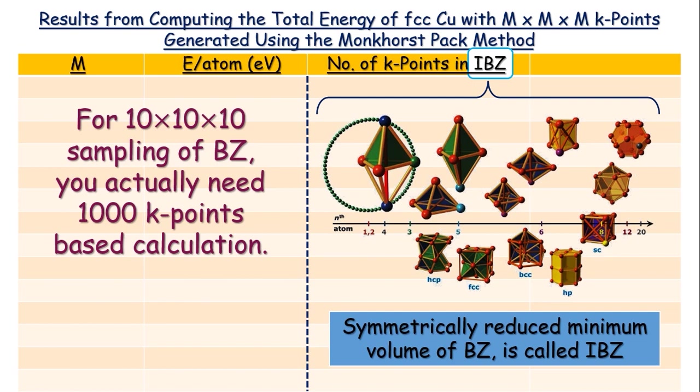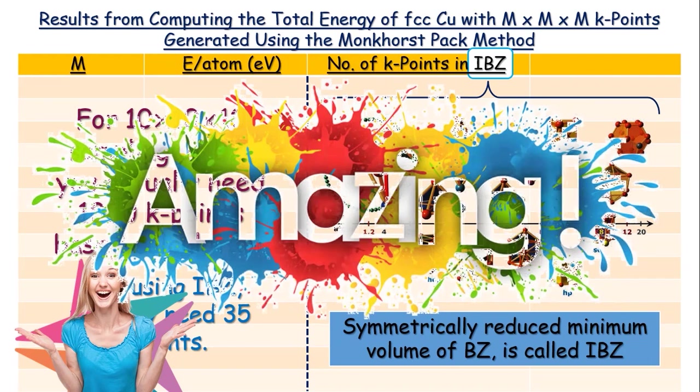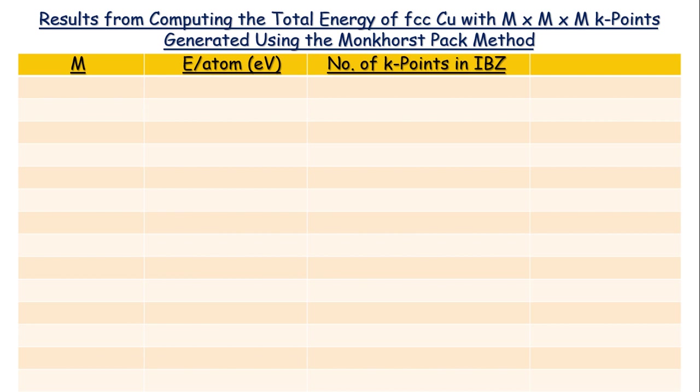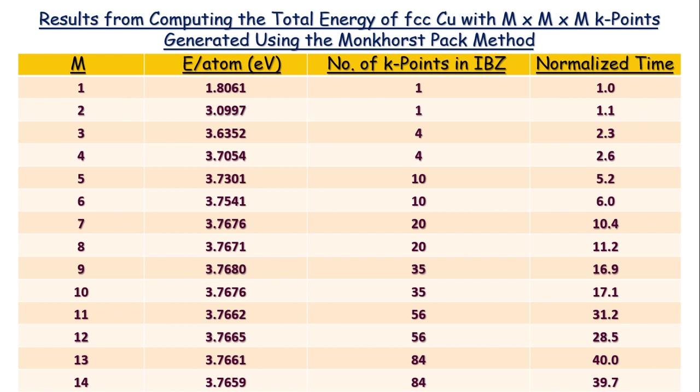Okay. Let's go back to our list. The next thing that is listed is normalized time. That is, time required for calculation with M cross M cross M K-points compared to the time required for 1 cross 1 cross 1 K-points. That is, the unit of time here is the time required for 1 cross 1 cross 1 K-points. In that unit, we are measuring everything. So, these times are just the multiples of the time required for 1 cross 1 cross 1 K-points. Let's consider only these two points.